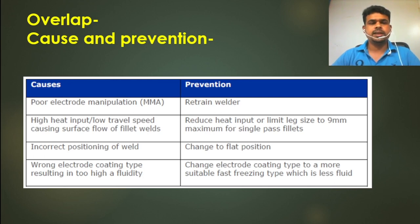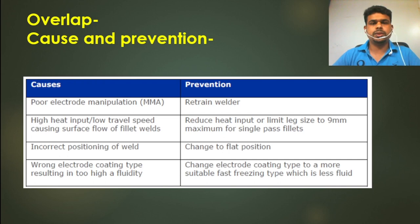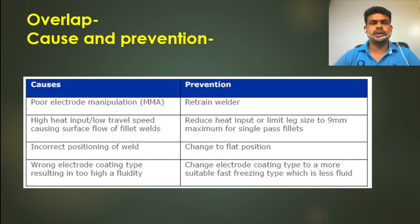Incorrect positioning of the weld — change to flat position. Wrong electrode coating type resulting in high fluidity — change electrode to a more suitable fast-freeze type. Basically, most problems come from high heat input, slow travel speed, welder skill, and improper electrode selection. The causes and prevention are almost the same for all defects and imperfections. We need to always take care of our welders performing perfect welding and use the proper WPS parameters.